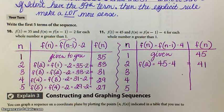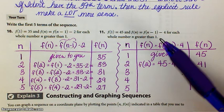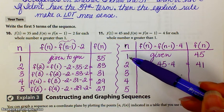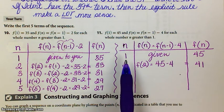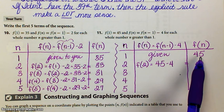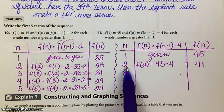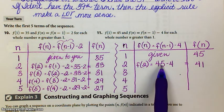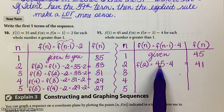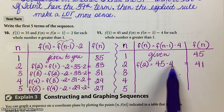Okay, looking at number 11, again, this is a recursive rule. We're going to use position numbers 1, 2, 3, 4, and 5. The first term is 45, the second term, the function value of the second term is the function value of the first term minus 4, so that gives us 41.